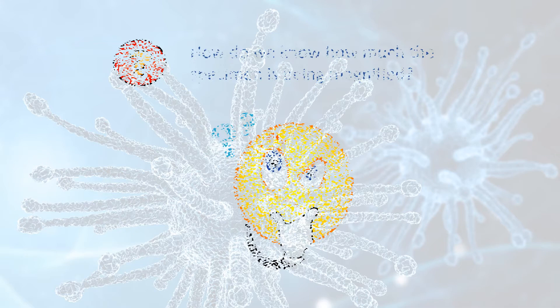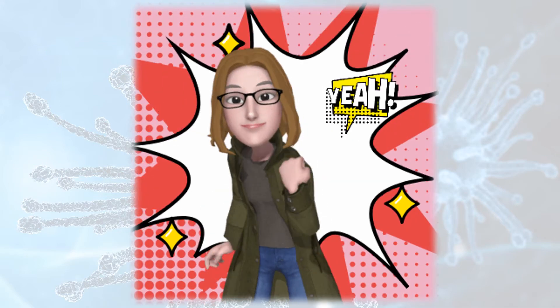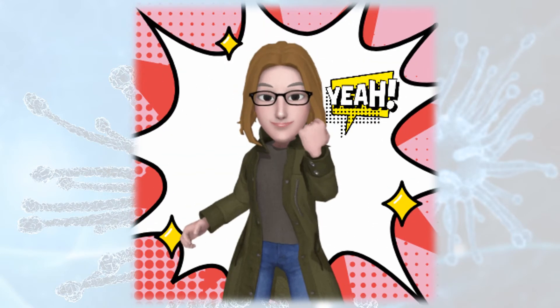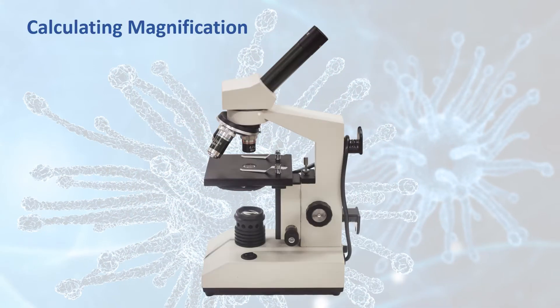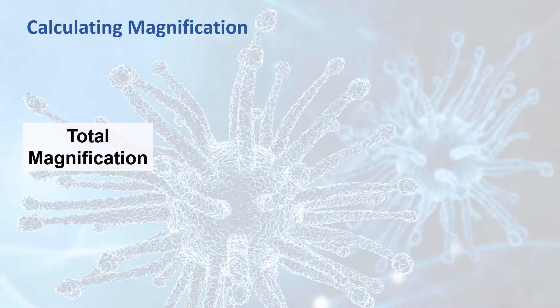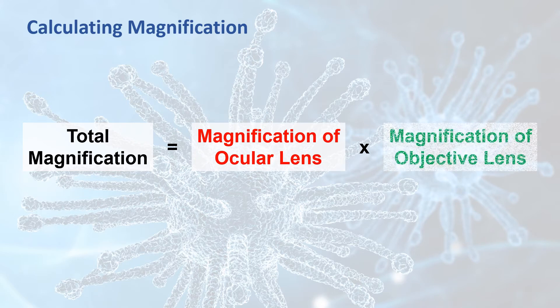So how do we know how much a specimen has been magnified? Well, lucky us! It turns out that figuring out the level of magnification is really easy to do. To calculate the magnification, you just need to know the magnifying power of your ocular lens and the objective lens that you're using. The total magnification is always equal to the magnifying power of the ocular lens multiplied by the magnifying power of the objective lens that you're using.